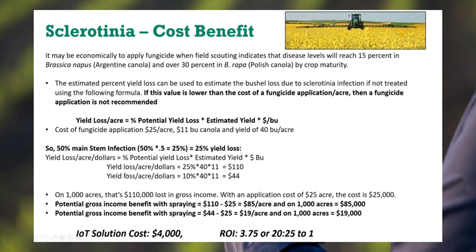Penciling that into the equation: at 25% yield loss on 40 bushels at $11 per bushel, that's $110 per acre lost. At 10%, it's $44 per acre. So on a thousand acres, if you subtract the $25 fungicide application cost, you're still making $85 an acre at 25% loss, and $19 an acre at 10% loss. So if your IoT solution was $4,000 to monitor this, you can make a significant return on a thousand acres — giving an ROI of 3.7 to 20 to 1 on that $4,000 IoT solution.